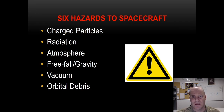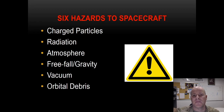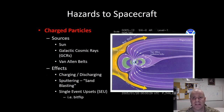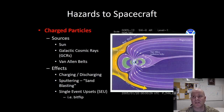The six hazards to our spacecraft are: charged particles, radiation, atmosphere, freefall, vacuum, and orbital debris. Charged particles are the most dangerous aspect of the space environment. The sun sends out a steady stream of charged particles as solar wind and periodic bursts of particles called solar flares. GCRs, or galactic cosmic rays, represent solar wind from distant stars or remnants of exploded stars. The Van Allen radiation belts protect us from the sun and GCRs, but can also pose another charged particle hazard.